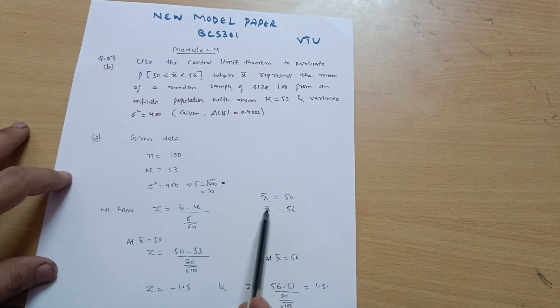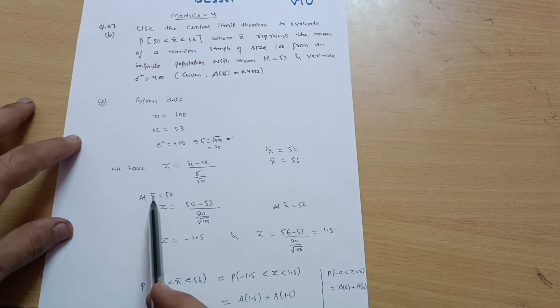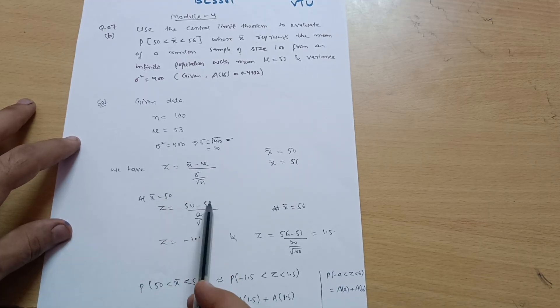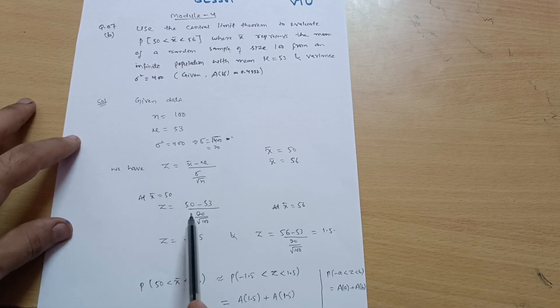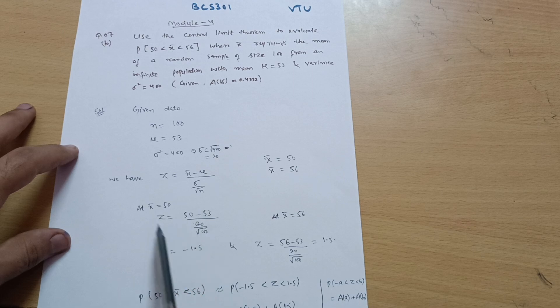At X̄ = 50: Z = (50 - 53) divided by (20/√100). The sample n means 100. While calculating this, you will get Z = -1.5.